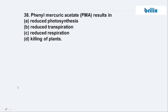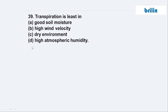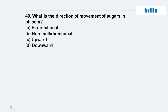Question 38: Phenyl mercuric acetate (PMA) results in — it reduces transpiration, option B. It is an anti-transpirant agent. Question 39: Transpiration is least when — in high atmospheric humidity, option D.